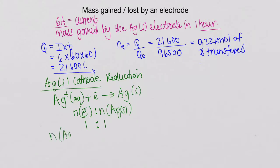So therefore, my number of moles of Ag solid should be equal to my number of moles of electrons transferred that I've worked out, which is going to be 0.224 moles.